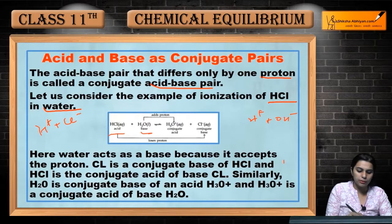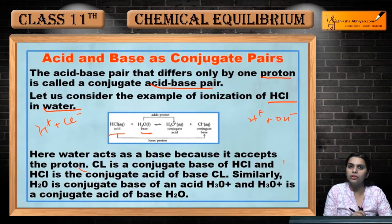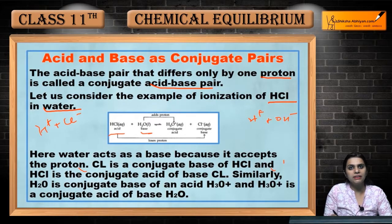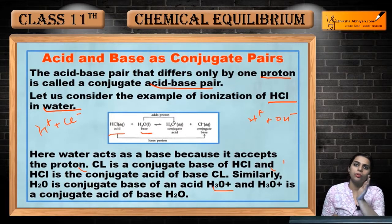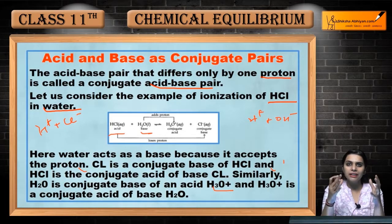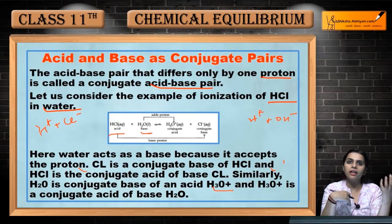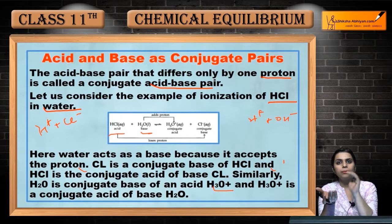So here, water acts as a base because it accepts the proton. Cl-negative is the conjugate base of HCl because HCl donated its proton. Similarly, H2O is the conjugate base of H3O-positive — when water accepted the proton, it became H3O-positive. The proton was donated from H2O, which acted as the base and accepted the proton to become the conjugate acid.